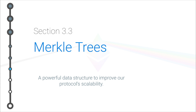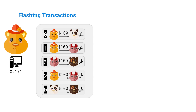Hey everyone, welcome to section 3.3 where we're going to be talking about Merkle trees. Now we had a bit of an oversimplification in the past few lectures. We talked about hashing all of the transactions of a block together with a previous block hash and a nonce in order to get the block hash.